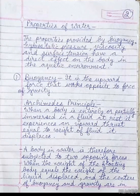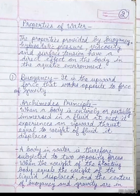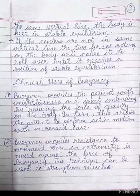The first property is buoyancy. It is the upward force that works opposite to the force of gravity. Here the Archimedes principle is applied: when a body is entirely or partially immersed in a fluid at rest, it experiences an upward thrust equal to the weight of fluid it displaces. A body in water is therefore subjected to two opposing forces. When the weight of the floating body equals the weight of the liquid displaced and the centers of buoyancy and gravity are in the same vertical line, the body is kept in stable equilibrium. If the centers are not in the same vertical line, the two forces acting on the body will cause it to roll over until it reaches a position of stable equilibrium.